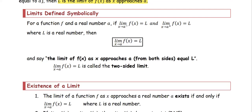Limits defined symbolically. For a function f and a real number a, if the limit of f(x) as x approaches a from the left equals L, and the limit of f(x) as x approaches a from the right equals L, where L is a real number, then the notation is: the limit of f(x) as x approaches a equals L — with no superscript plus or minus, because both directions provide the same limit value L. This is called the two-sided limit.